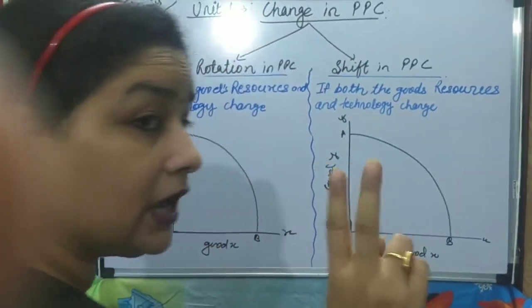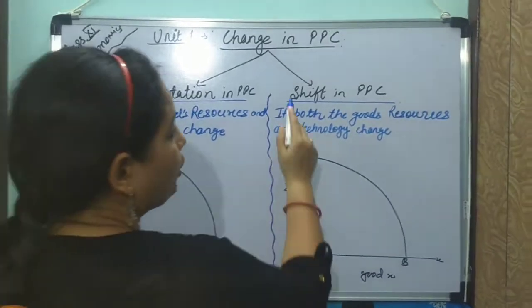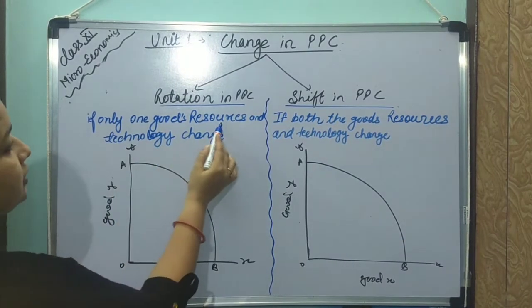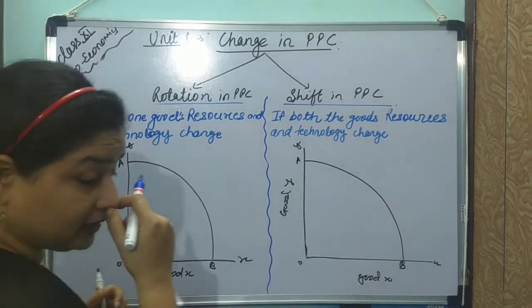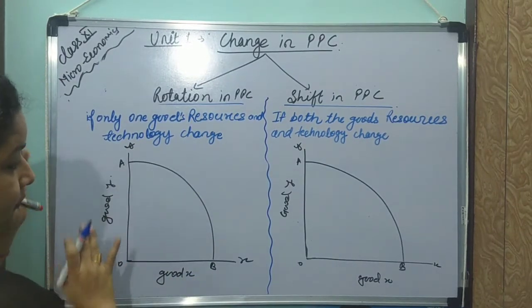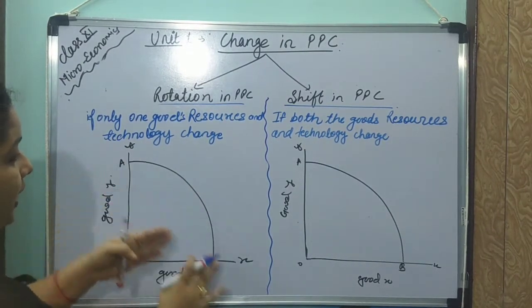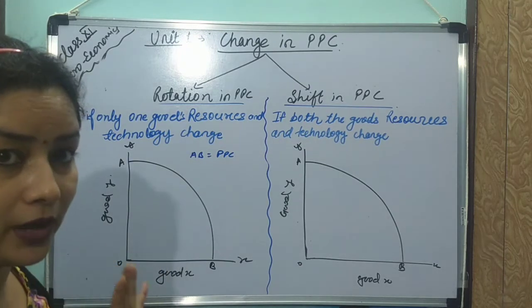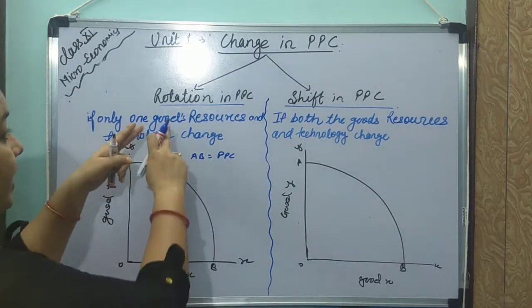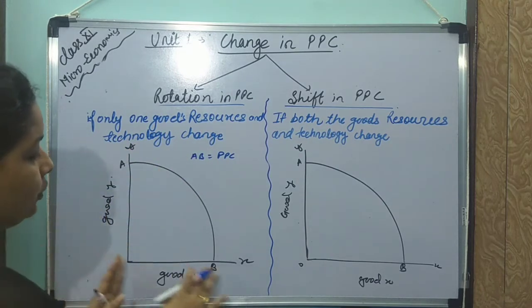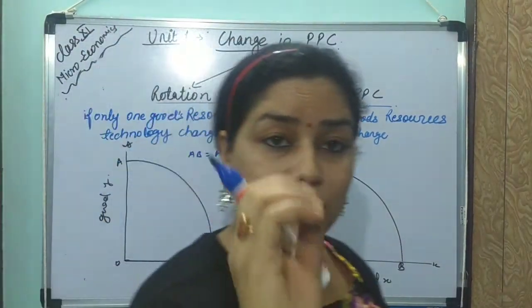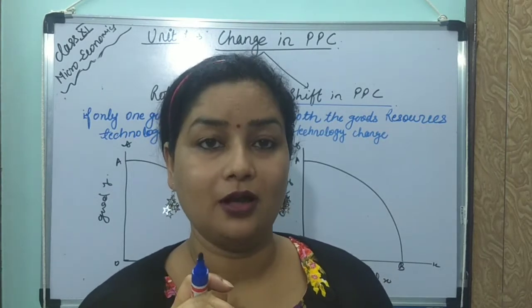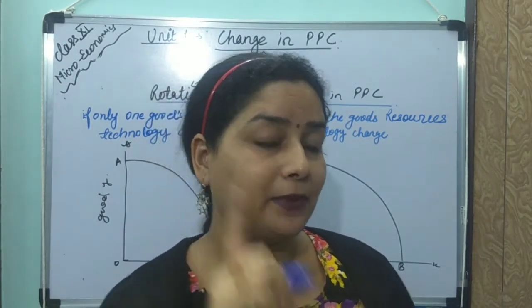There are two directions of change in PPC: one is rotation in PPC and the other is shift in PPC. Rotation means if only one good's resources and technology change. We have Good X on one axis and Good Y on the other, and their combinations form PPC. If originally PPC is AB, and only one of the goods changes in resource or technology, only rotation occurs — change happens on only one axis.